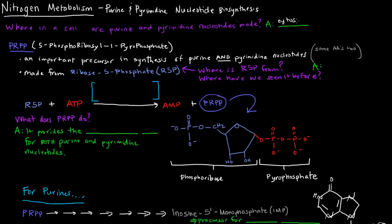One important molecule involved in the synthesis of purine and pyrimidine nucleotides is PRPP, which is short for 5-phosphoribosyl-1-pyrophosphate. It's an important precursor in the synthesis of those nucleotides, and it's also important in the synthesis of some amino acids as well, but we're not going to focus on that in this video.